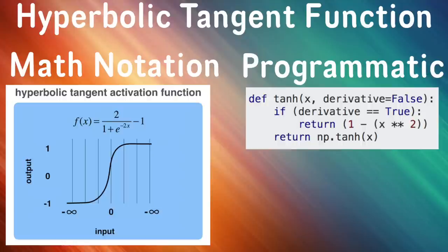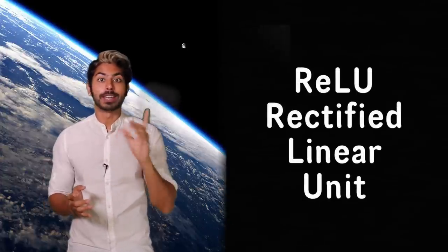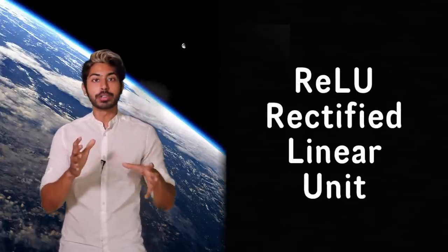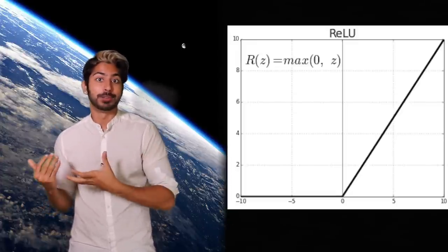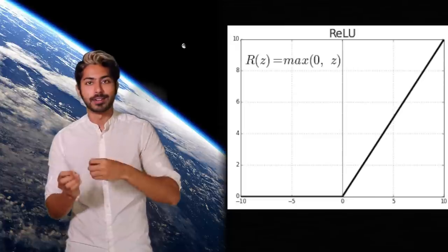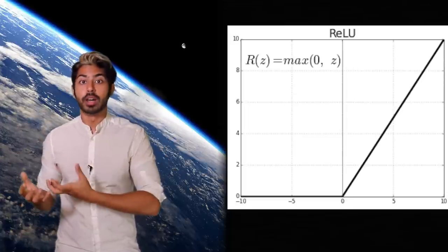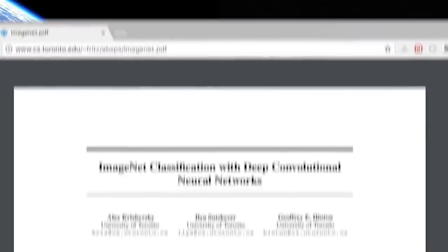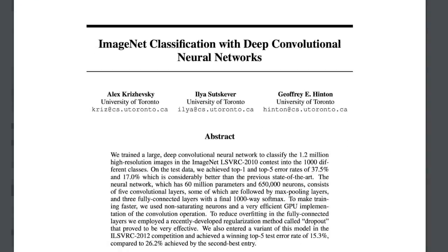Enter ReLU, or the rectified linear unit. This activation function has become really popular in the last few years. It's just max(0, x), which means that the value is 0 when x is less than 0 and linear with a slope of 1 when x is greater than zero. It was noted that it had a 6x improvement in convergence over tanh in the landmark ImageNet classification paper by Krizhevsky.